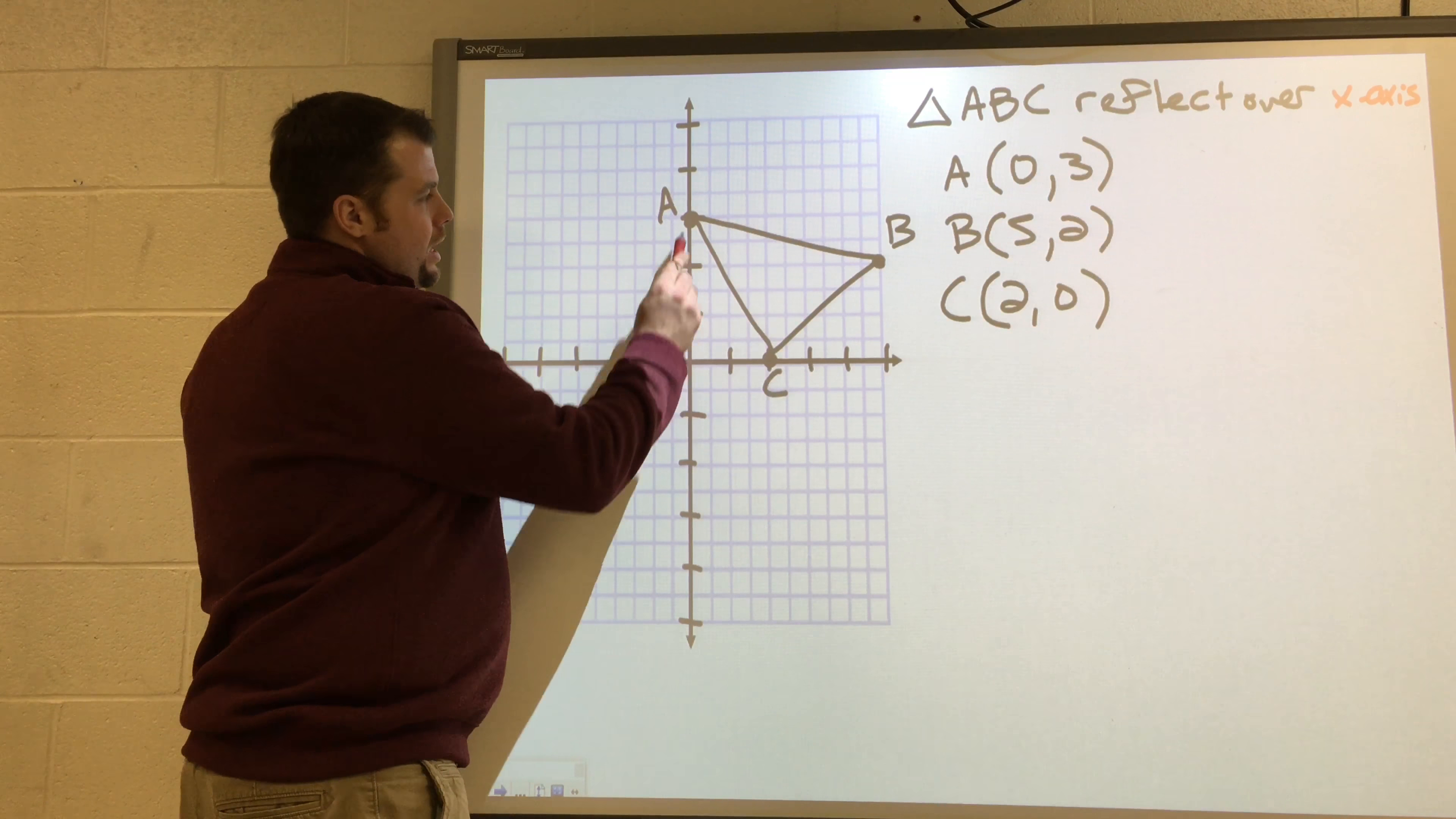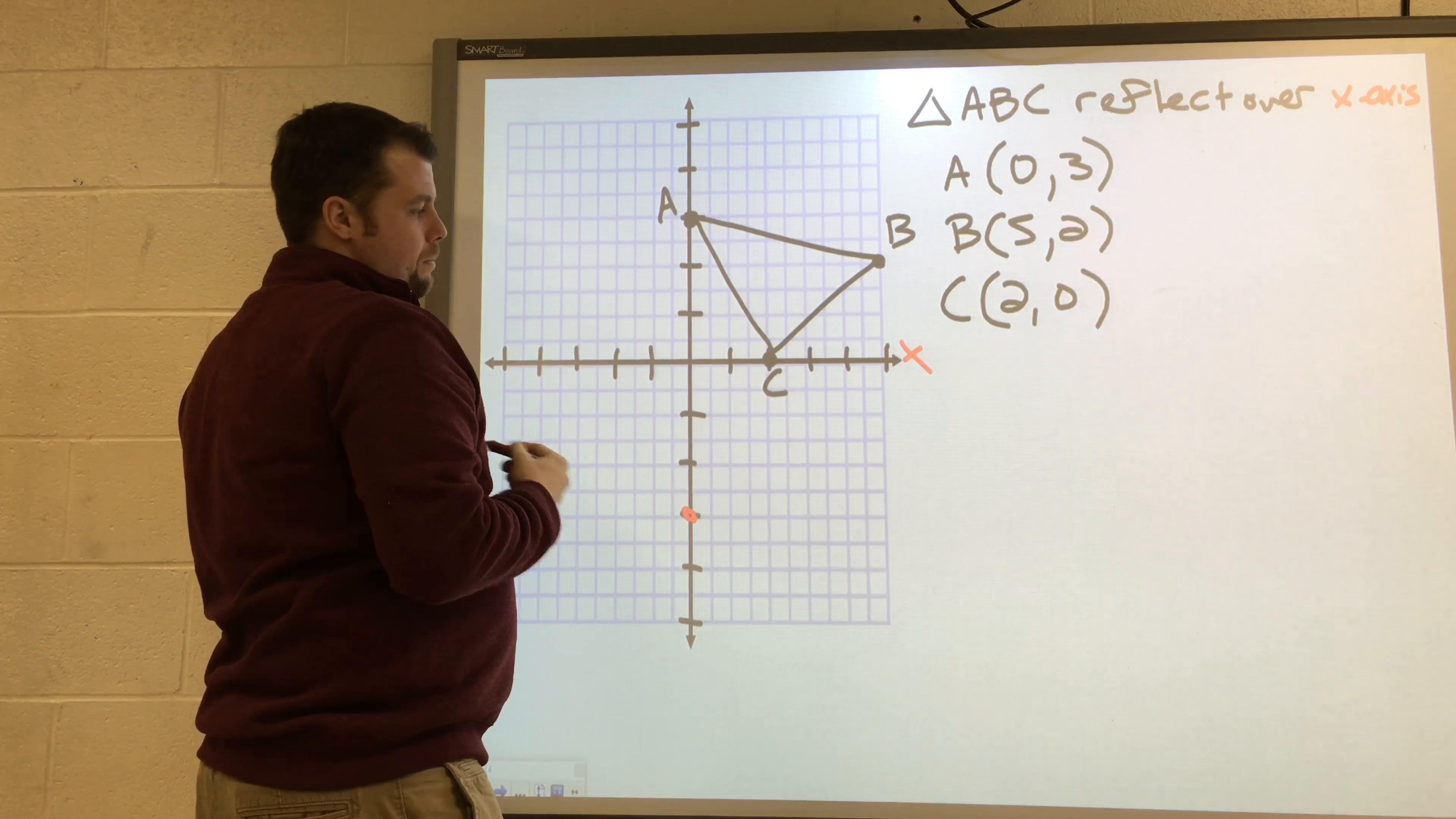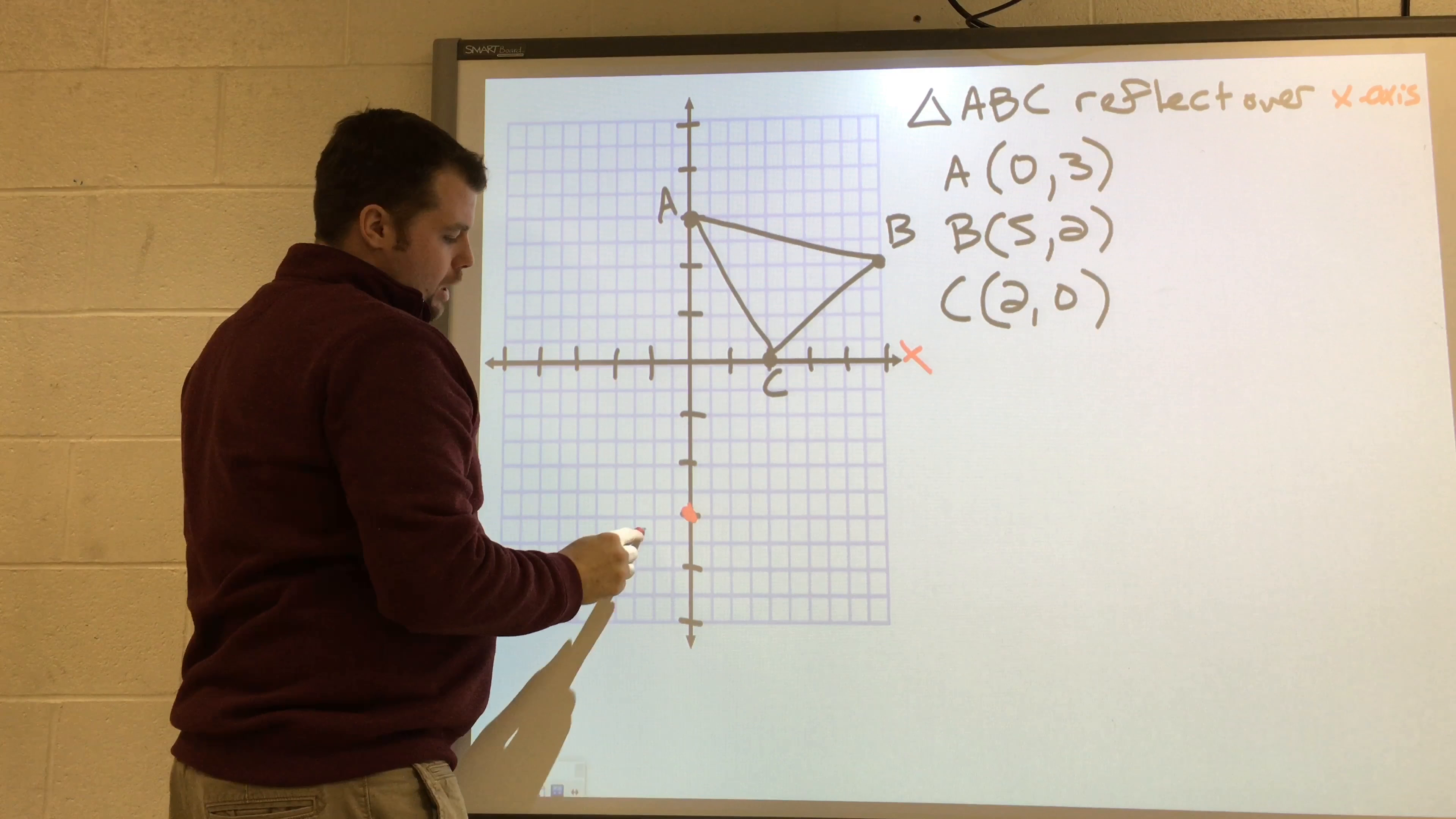For example, if I take a look at A, it is three units above this x-axis. So I'm going to move it three units below the x-axis to right there. Every unit is marked with a half unit here focused on these big intervals. So it was three units above, I moved it three units below.